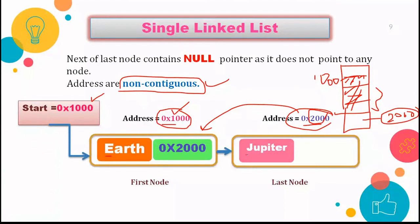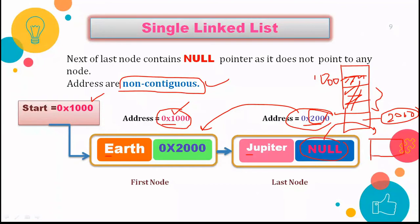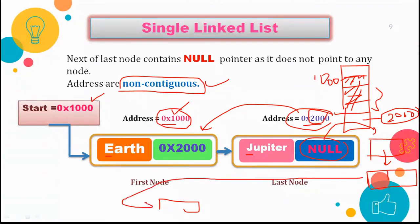After Earth, Jupiter comes next, so Jupiter is stored in the next node. Mars follows Jupiter, so the Jupiter node points to the address of the Mars node. Mars then points to Mercury, and in this way all nodes are connected. The last node is Venus, and in Venus's next part we store null, meaning the last node is not pointing to any other node. In this way we store planet names using a singly linked list.